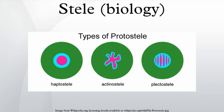The concept of the stele was developed in the late 19th century by French botanists Van Tieghem and Douliot as a model for understanding the relationship between the shoot and root, and for discussing the evolution of vascular plant morphology. Now, at the beginning of the 21st century, plant molecular biologists are coming to understand the genetics and developmental pathways that govern tissue patterns in the stele.